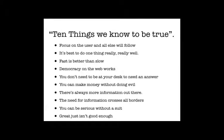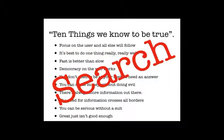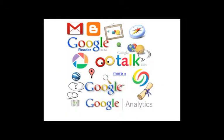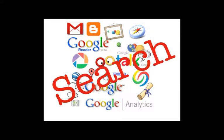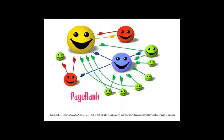We could spend a whole day discussing these and how they relate to library values. I'm going to focus on this one: it's best to do one thing really, really well. Google defines that one thing as search. That's the sliver of Google I'm going to look at today. I know there's Google Talk, Google Reader, Google Book Settlement, Blogger, Google+ — I'm not bringing those into the discussion. I'm focusing on search.